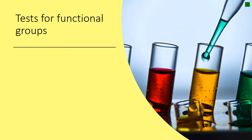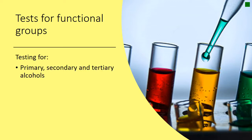Here we have a video on testing for functional groups. The functional groups we're interested in are the primary, secondary and tertiary alcohols — we need to know how to test for them — the aldehydes and ketones, and the carboxylic acids. Those are the ones we're interested in in this video.